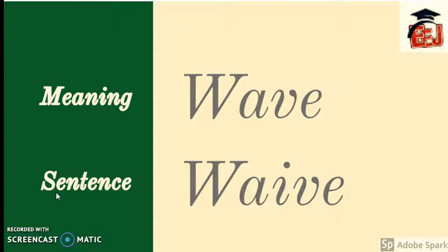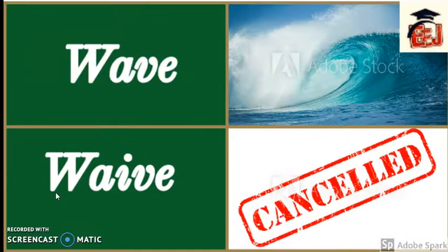Let's study their meanings, examples, and usages. 'Wave' (W-A-V-E) means a sea or river wave, whereas 'waive' (W-A-I-V-E) means to cancel or to remove something. Now let's study how to frame sentences with these two words.